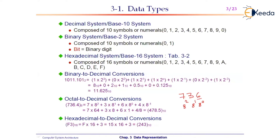There is also a digit right after the octal point. This is an octal point, not a binary point. If a number follows the octal point, its weight will be 8^(−1). So 4 × 8^(−1) = 4/8. Adding all gives the answer 478.5.